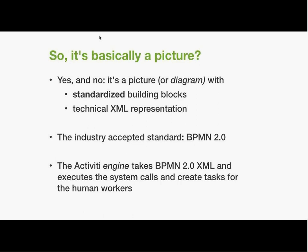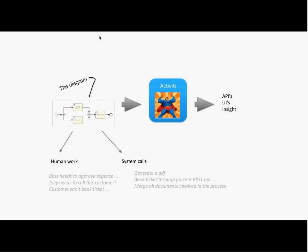Is it just a picture you give to Activiti? No — it has two sides. You've got the diagram, and the building blocks of that diagram are standardized using the BPMN 2.0 standard, which stands for Business Process Model and Notation. It specifies things like: a rectangle with a user icon means a user task, a small circle means an event. The other side is that the format storing this diagram is XML with a lot of technical details — you're feeding an XML file into Activiti which happens to be visualizable as a diagram.